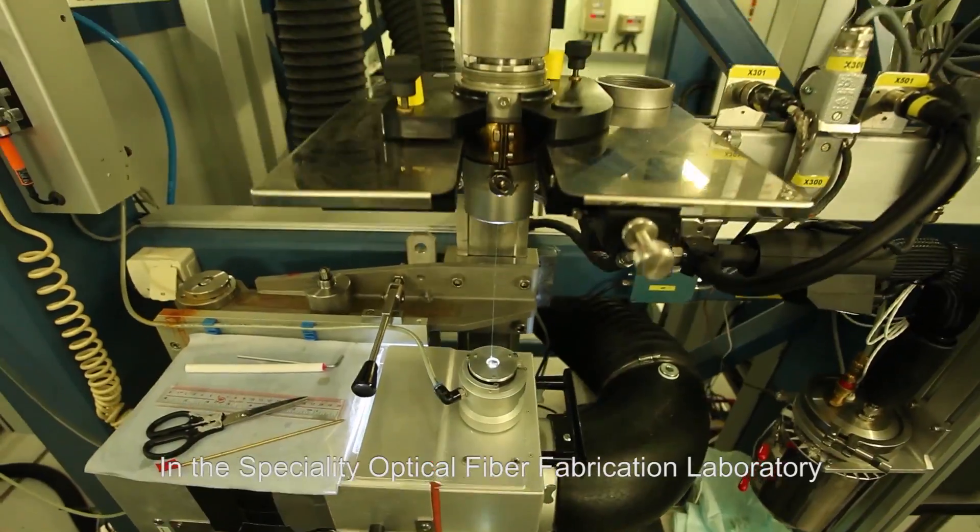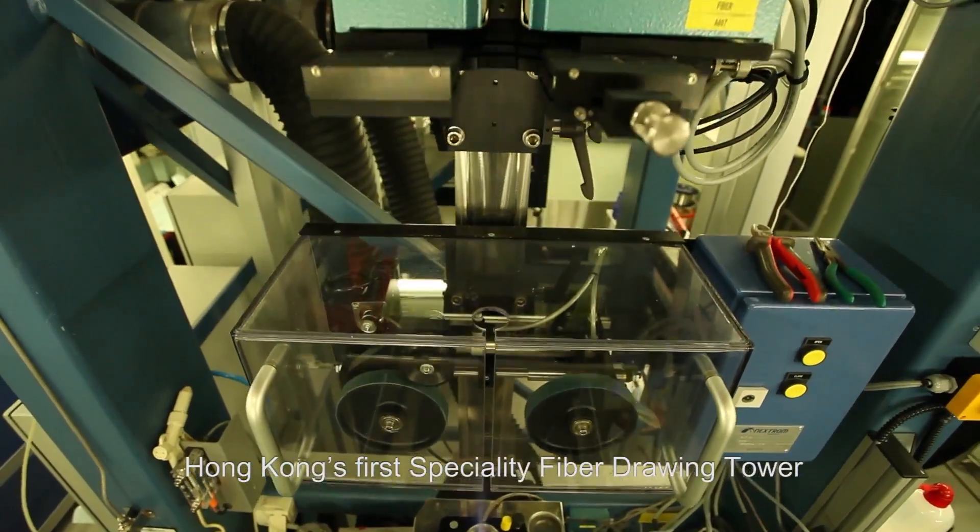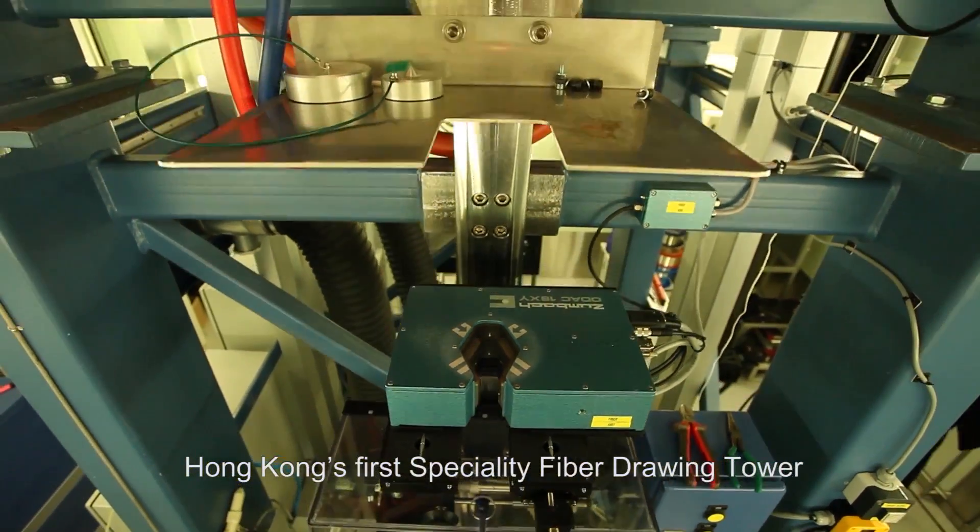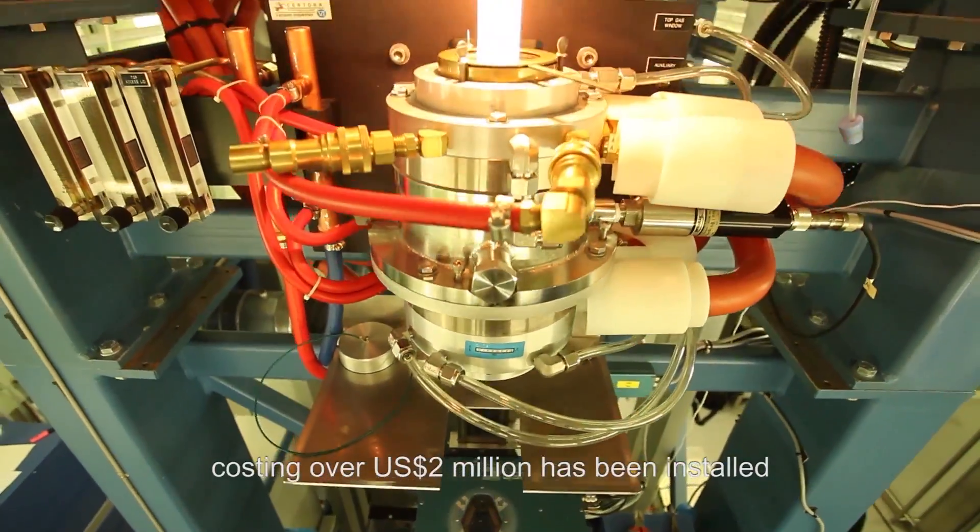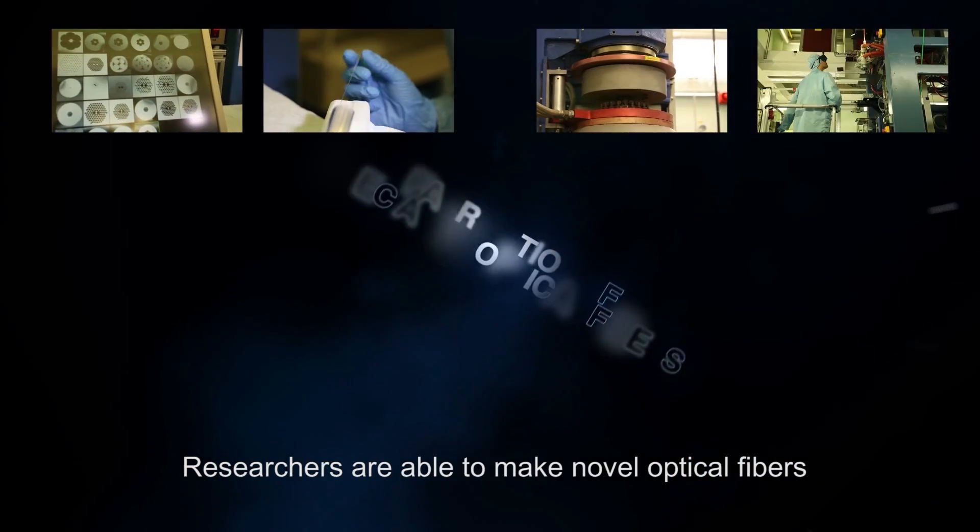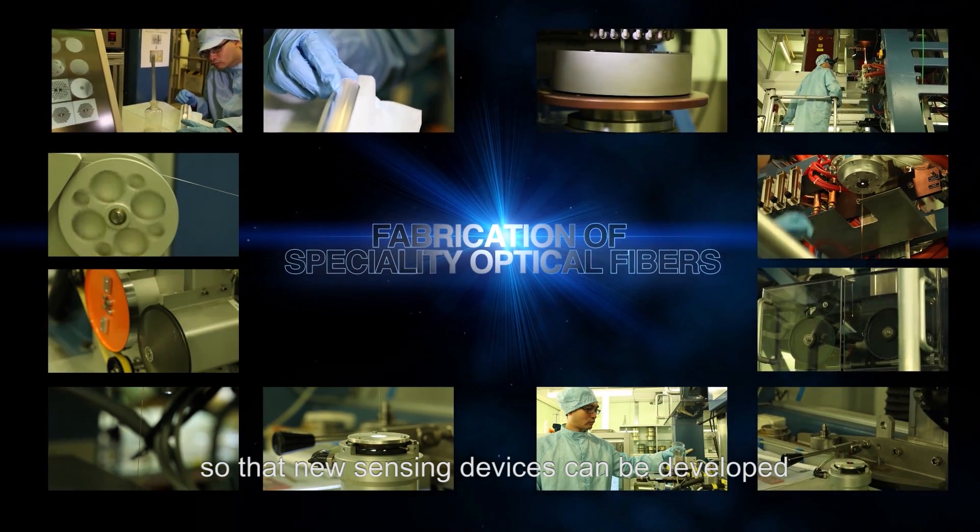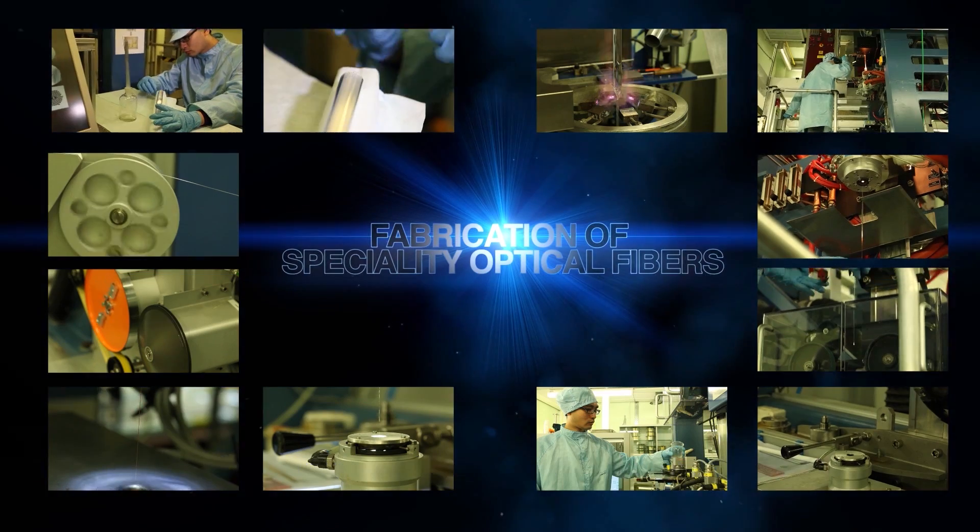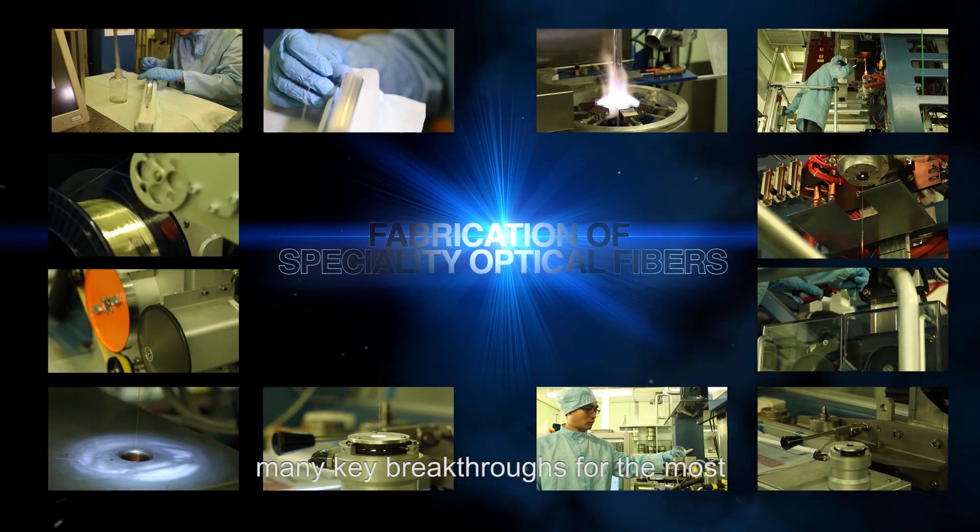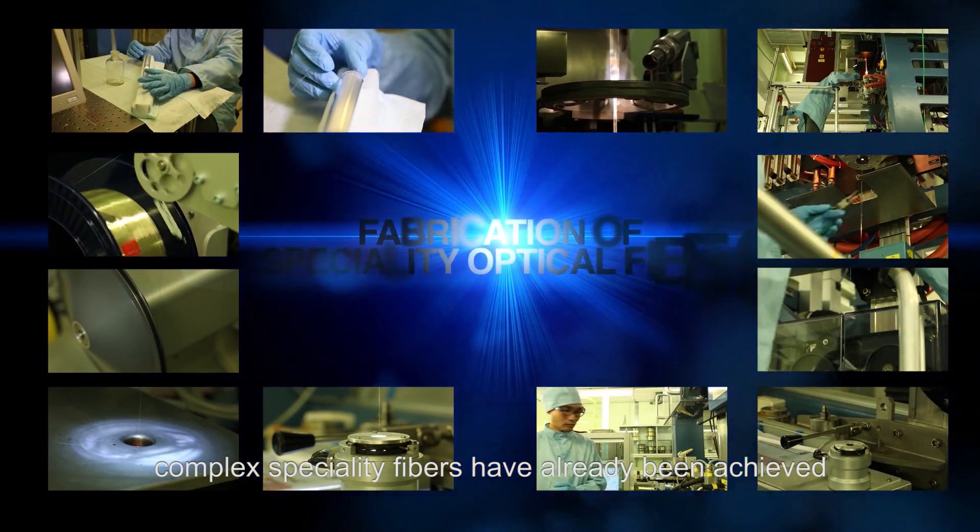In the Specialty Optical Fiber Fabrication Laboratory, Hong Kong's first Specialty Fiber Drawing Tower, costing over US$2 million, has been installed. Researchers are able to make novel optical fibers, so that new sensing devices can be developed. Throughout the years, many key breakthroughs for the most complex specialty fibers have already been achieved, and these fibers are suitable for the most challenging telecommunication and sensing applications.